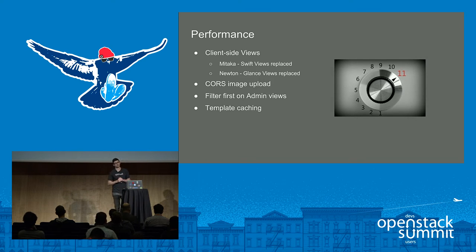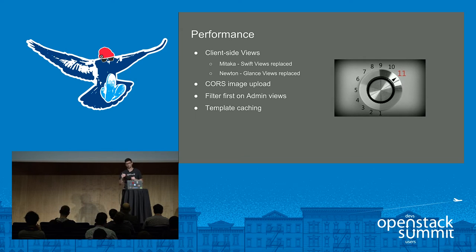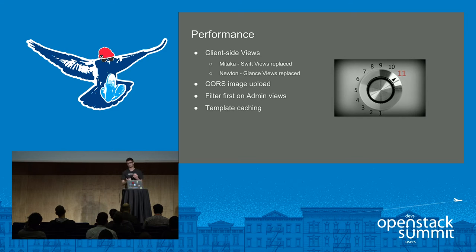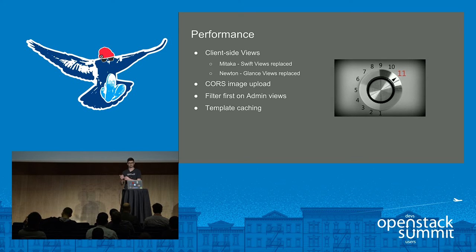We've also added configurable filter requirements on admin views. When you view any admin panel in Horizon, you're making a great deal of API requests across a large amount of data, all in sequence — which can take a very long time. Often you don't even want all that data at once because it's meaningless; you're going to search for specific things. So we made these views require a filter before returning any data, resulting in a much faster interaction on admin views.